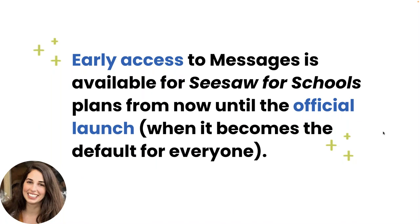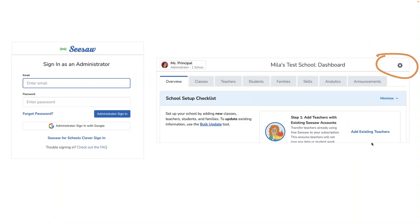As a reminder, as Kara mentioned, as a Seesaw for Schools admin you can now turn on messages as part of our early access program. At the time of the official launch, which is by August of this year, messages will replace the old announcements tab visible to admin and the inbox visible to all other Seesaw users, regardless of the Seesaw plan they have. But the sooner you turn on messages, the sooner you can start taking advantage of all the great ways to communicate and connect with your school community. Now let's jump in — feel free to follow along on your computers if you would like.